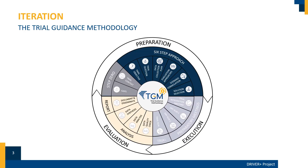By now you have seen the three phases of the trial guidance methodology and the different steps of the preparation phase. Now you might think that this phase is a large linear process, but it actually is not. You should iterate. That means you should go through the steps multiple times and adjust your trial design as you move from rough ideas to the details. Besides repeating, iterating also means jumping in between steps.